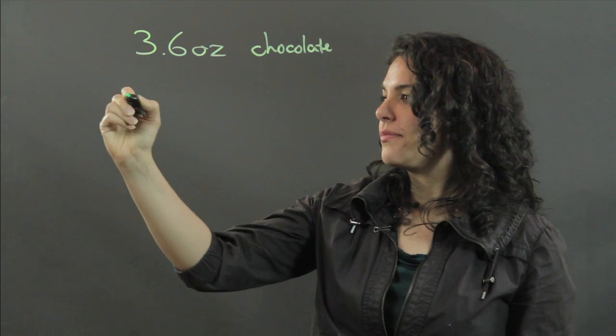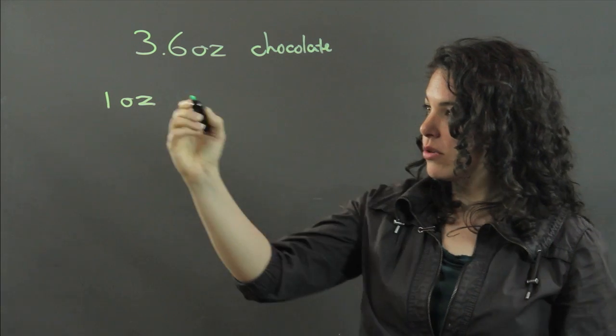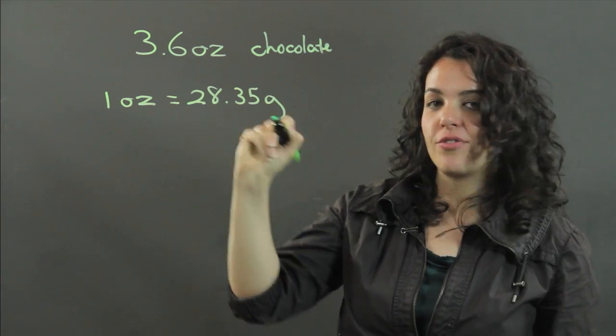Well, one ounce is equal to 28.35 grams.